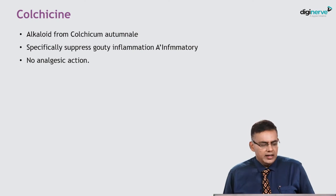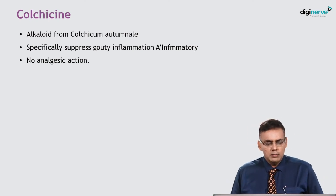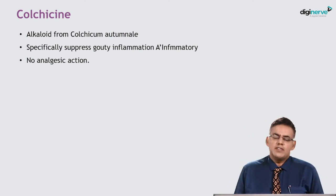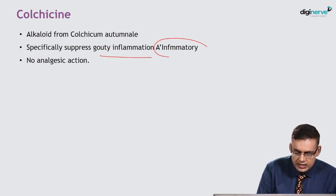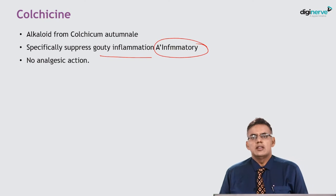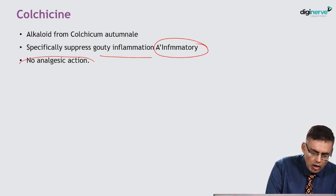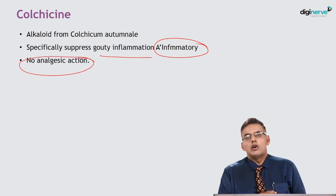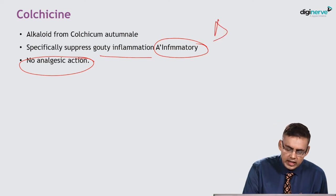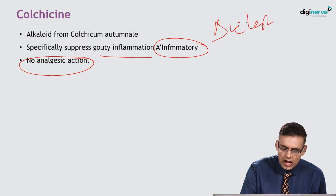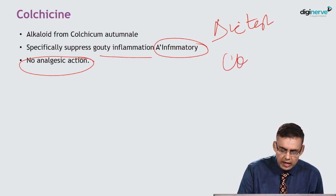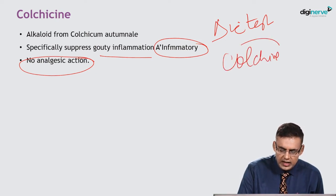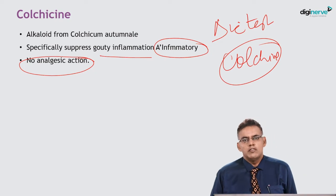The first drug is colchicine. Colchicine is an alkaloid obtained from Colchicum autumnale. It specifically suppresses gouty inflammation and has anti-inflammatory action, but remember it has no analgesic action. Colchicine can also be used as a diagnostic test — if pain or arthritis is relieved by colchicine, it indicates the condition is gout.